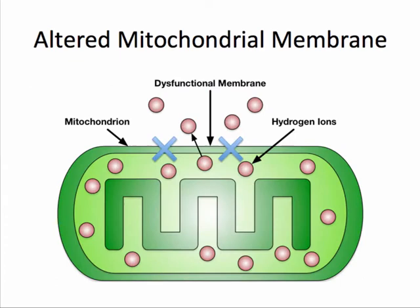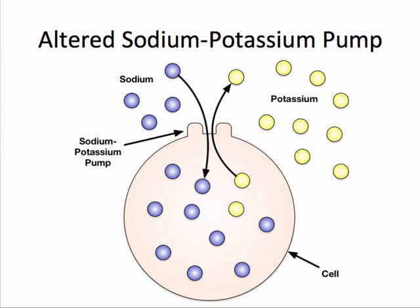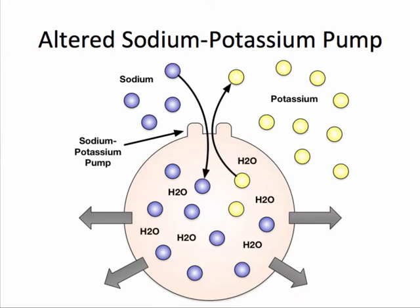Because oxygen is no longer available to accept the last electron in the electron transport chain, there's a buildup of hydrogen ions within the mitochondrion. This results in an acidic environment that ultimately disrupts the stability of the mitochondrial membrane. Because there's a lack of ATP, the sodium potassium pumps fail to maintain the concentration of sodium and potassium inside and outside the cell. The result of this is the movement of sodium into the cell. Where sodium goes, water follows. This results in swelling of the cell and ultimately rupture of the cell.